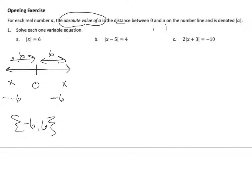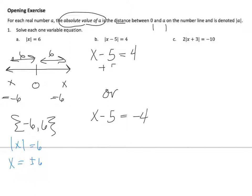I can also look at it as: when I have absolute value of x equals 6, x can equal plus or minus 6 and then I would solve it. So if I look at this next one, if I take down those absolute value bars, I can say x minus 5 equals 4 or x minus 5 equals negative 4, and then I have to solve each of those separately. x equals 9, x equals 1. So my set notation would be 1 comma 9.